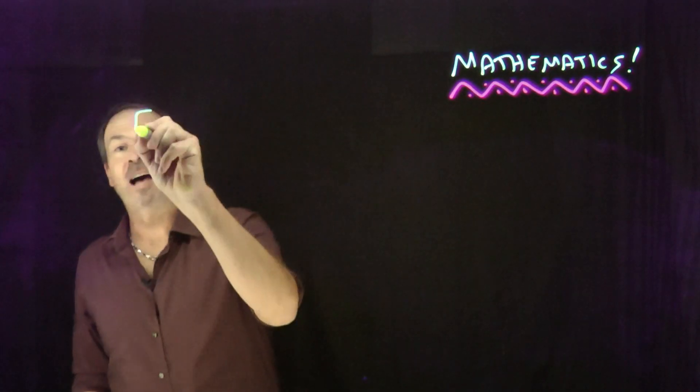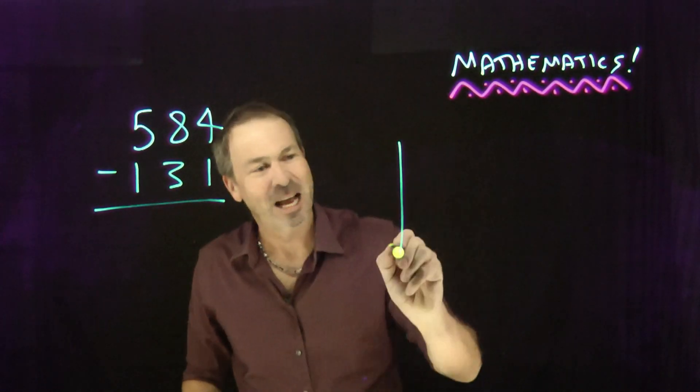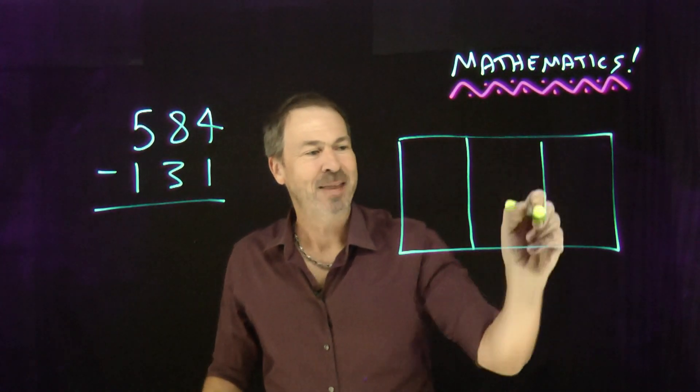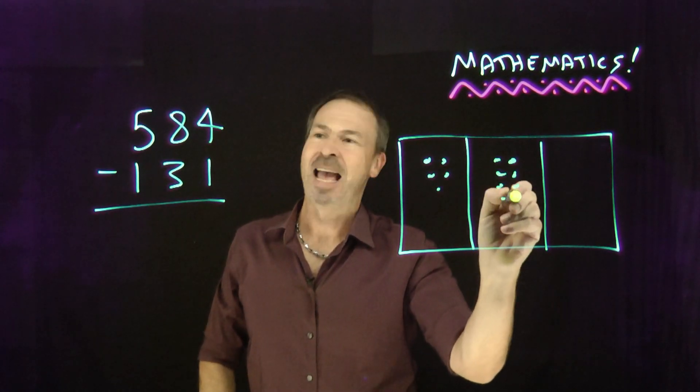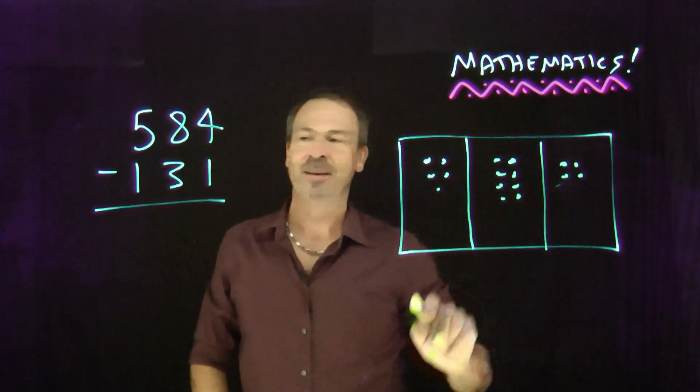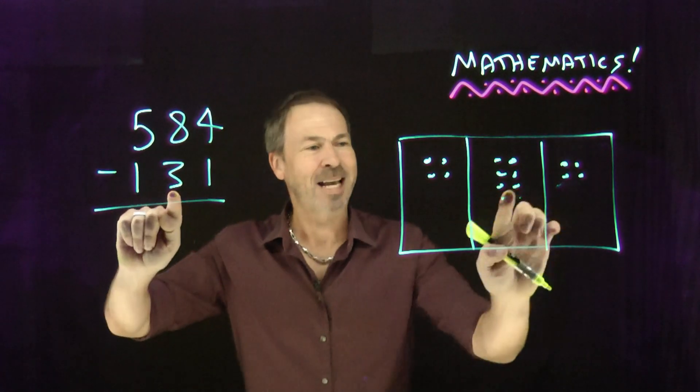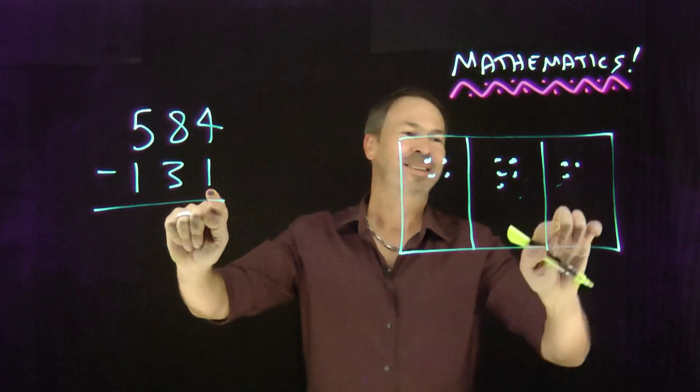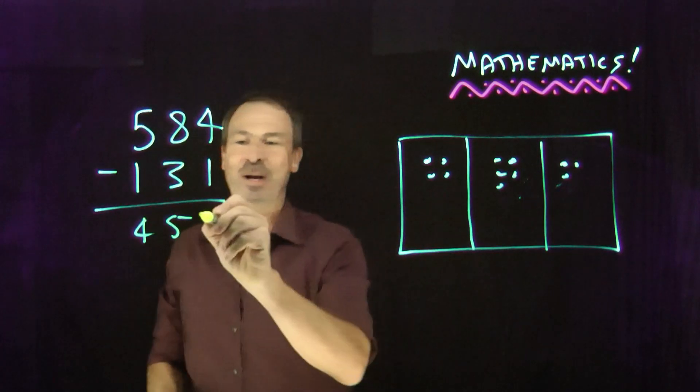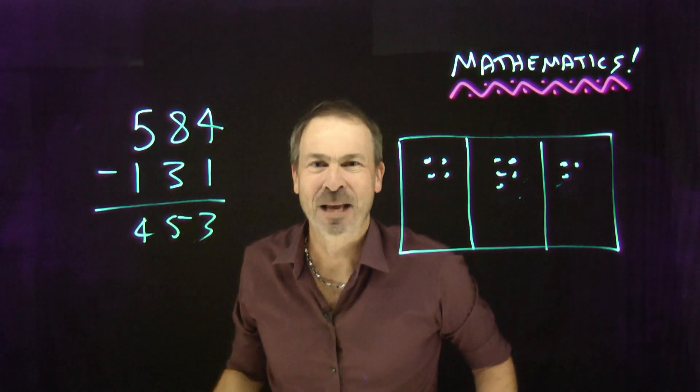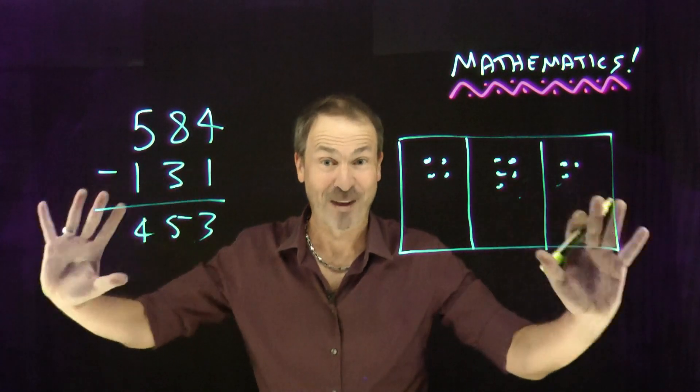Suppose I want to do a subtraction problem: 584 take away 131. I'd visualize it with our wonderful place value system. That is five hundreds, eight tens, and four ones. Please take away 100, take away three tens, take away one. I see I'm left with four hundreds, five tens, and three ones. The power of place value!